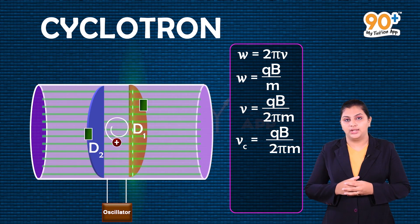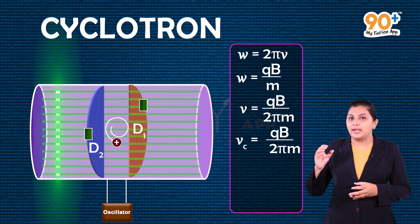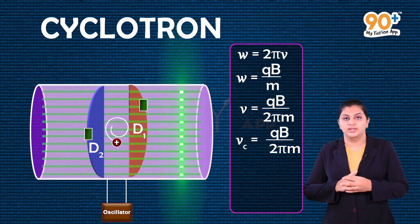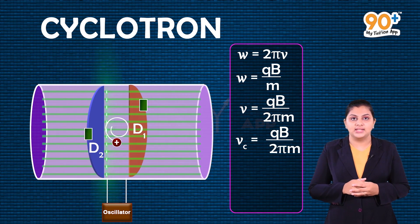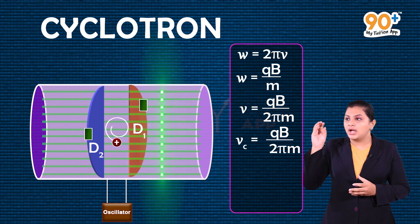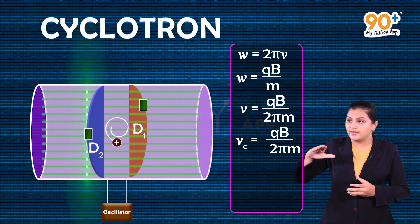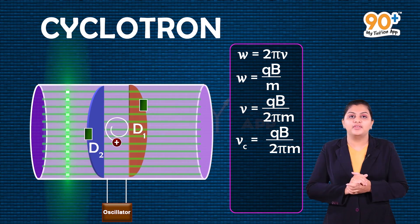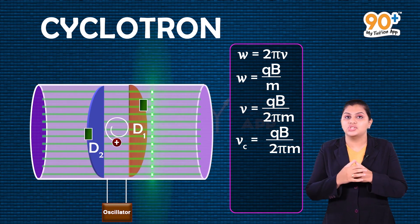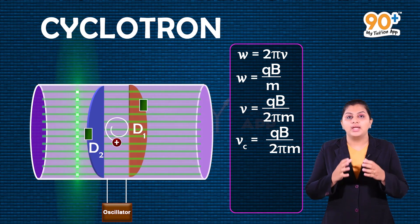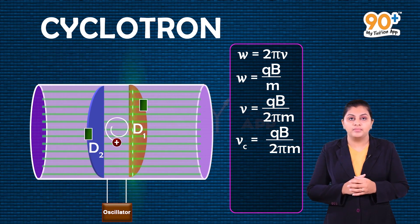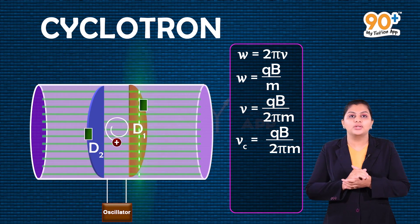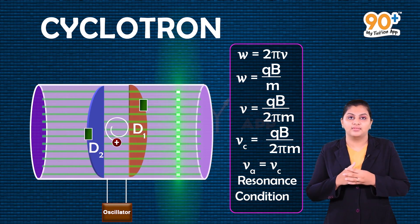The applied voltage frequency ν_a must be adjusted so that each time the ion completes a half revolution, the polarity reverses. The condition where the applied voltage frequency ν_a equals the cyclotron frequency ν_c is called the resonance condition.